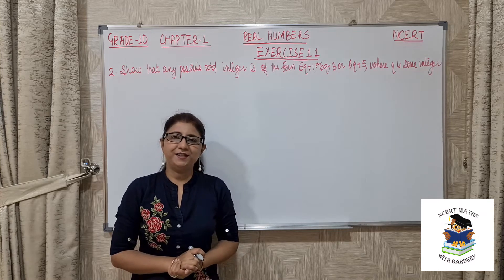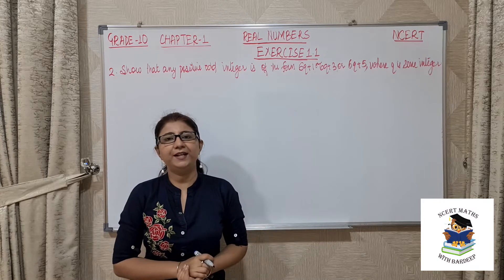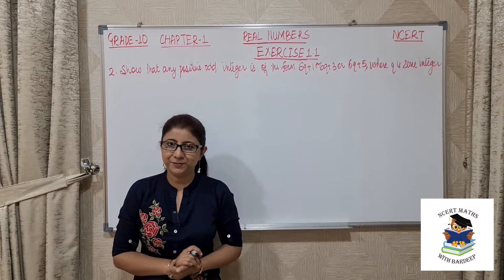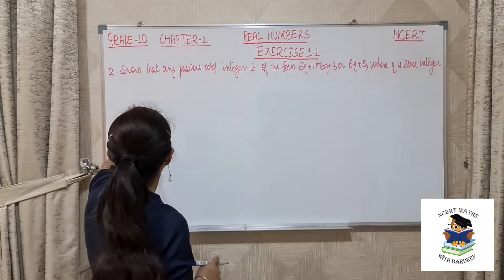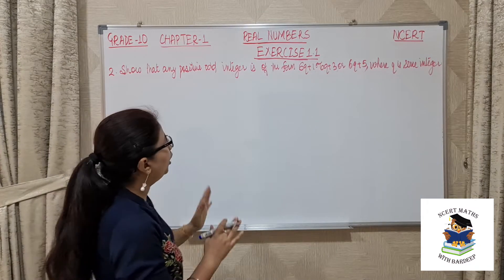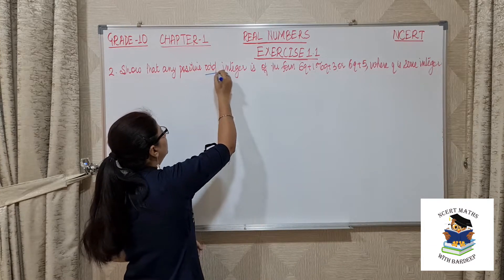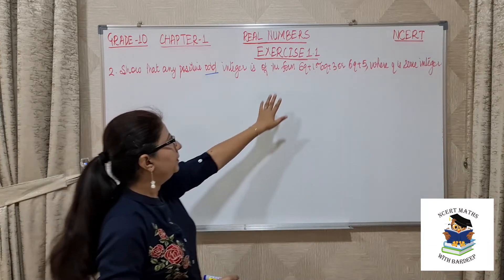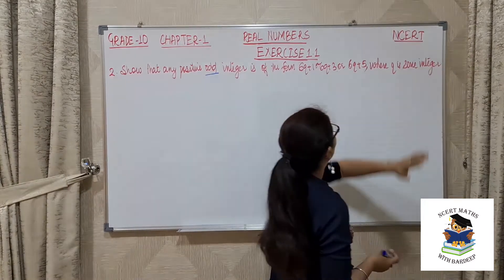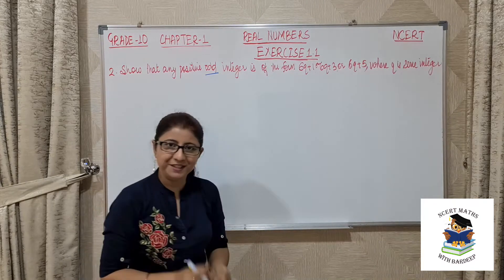Hello everyone, welcome back to my channel NCRD Maths with Bhadir. Today we are continuing our exercise number 1.1 of chapter 1, that is real numbers of grade 10. Our second question is: show that any positive odd integer is of the form 6Q plus 1, or 6Q plus 3, or 6Q plus 5, where Q is some integer.